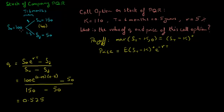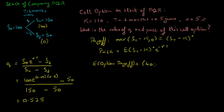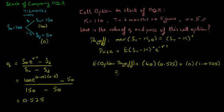On the other hand, if the stock price goes down to 50, the option is out of the money, as the stock price is less than the strike price. In that case, the payoff is 0. So the expected option payoff equals the payoff if the stock price goes up (which is 40) times the probability that the stock price will go up (0.525), plus the payoff if the stock price goes down (which is 0) times the probability that the stock price will go down. So the expected option payoff is 21.